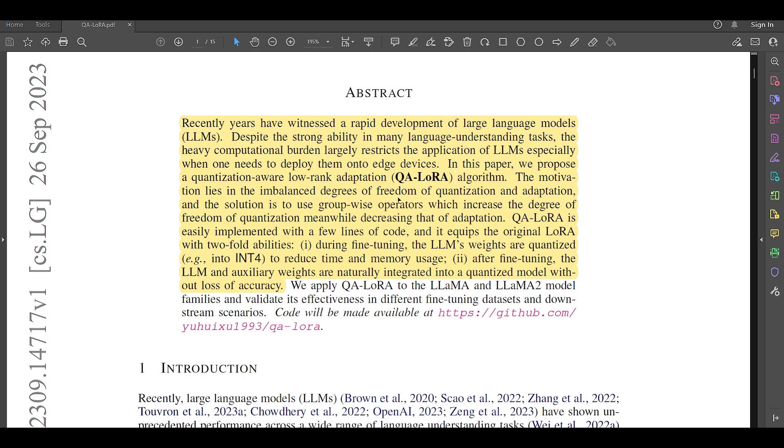The phrase imbalanced degrees of freedom highlights a conflict between the aims of quantization and adaptation. While quantization seeks to compress the model by reducing degrees of freedom, adaptation seeks to fine-tune the model which might require maintaining or even increasing the degrees of freedom. The QA-LoRA algorithm attempts to balance this imbalance by employing group-wise operators. These operators help in increasing the degree of freedom during quantization while reducing it during adaptation, striking a balance that allows for both model compression via quantization and effective fine-tuning via adaptation.